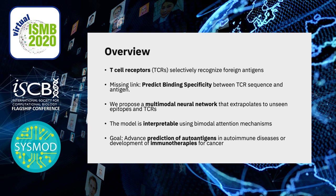That means we are effectively blind to the function of most T cells, because we only ever get information about the T cell receptor sequence and it doesn't tell us what they bind, and so it doesn't tell us their function. Here we propose a multimodal neural network that will predict this binding specificity, and we want it to extrapolate both to unseen epitopes and unseen T cell receptors, so the model will be able to predict binding affinities for new data as it arrives.